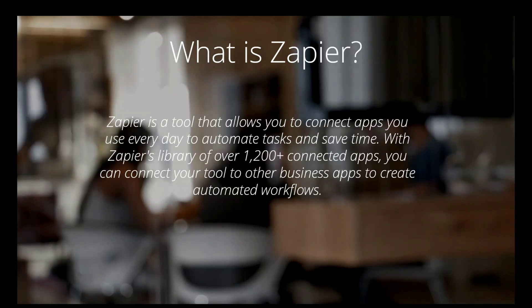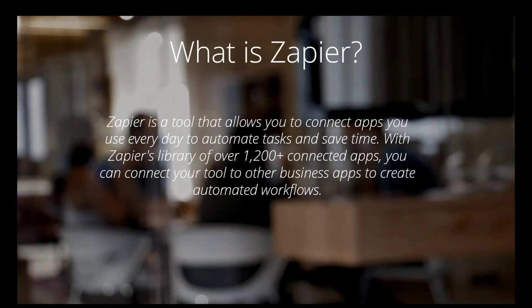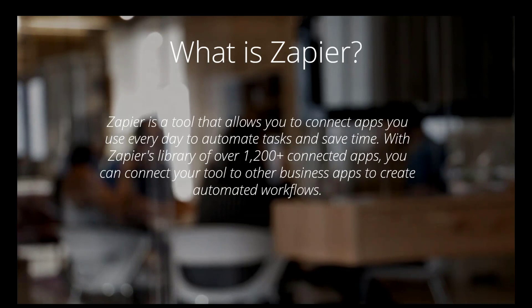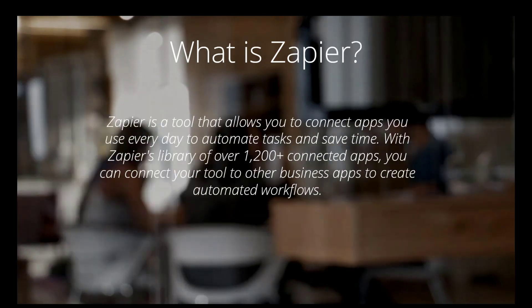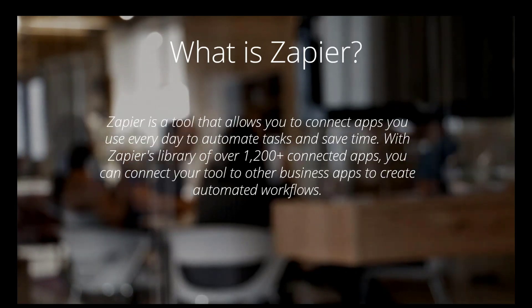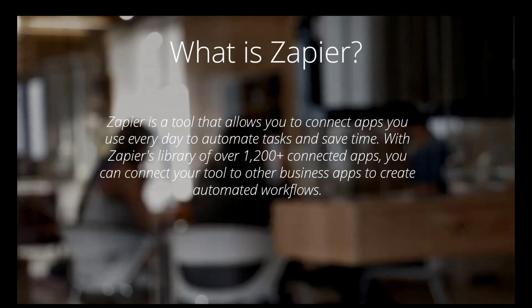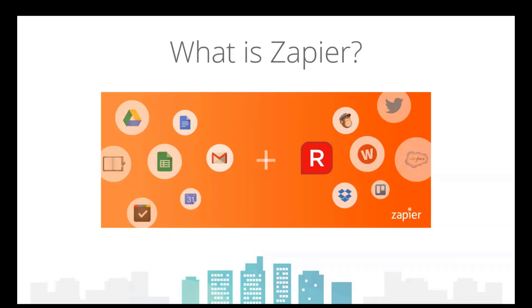The official explanation from the good people of Zapier is that it's a tool that allows you to connect apps you use every day to automate tasks and save time. With Zapier's library of over 1,200 apps you can connect your tools to other business apps to create automated workflows. The key to Zapier is connecting lots of different apps together in ways you could never have imagined before, with almost infinite possibilities.